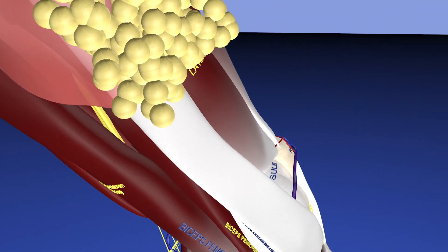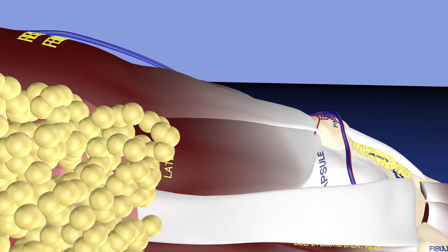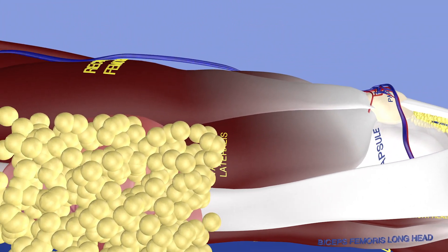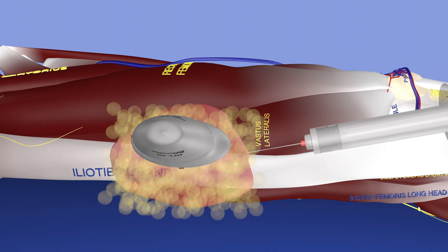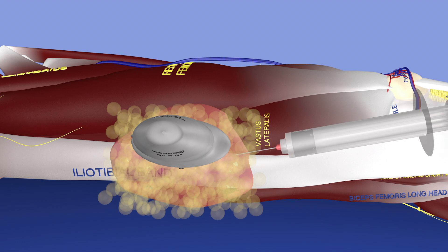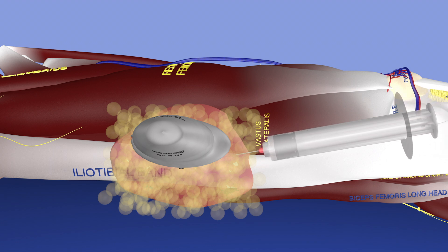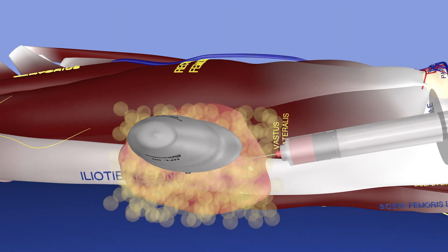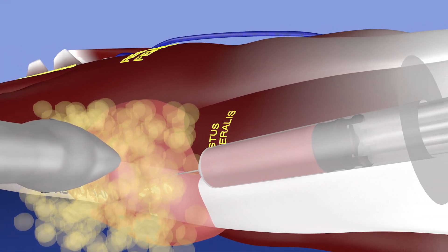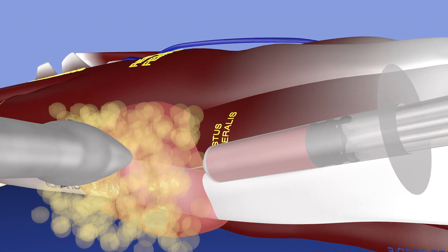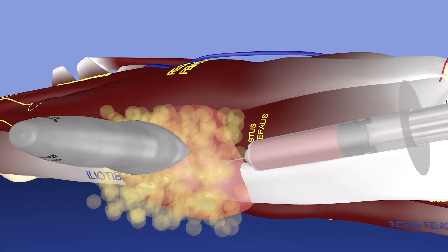Now we're bringing the thigh into procedure position as the patient lies supine. Here we are with our syringe — we made the subcutaneous fat somewhat translucent. The needle goes right into the inferior aspect of the lesion to allow gravity to help collect all the fluid. We aspirated through many syringes to get as much fluid out as possible.